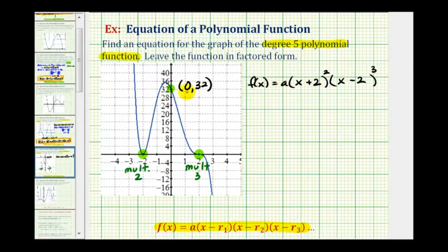If this function contains the point zero thirty-two, then f of zero must equal thirty-two, and we can use this to find the value of a. So now we'll set x equal to zero, and set this function value equal to thirty-two.